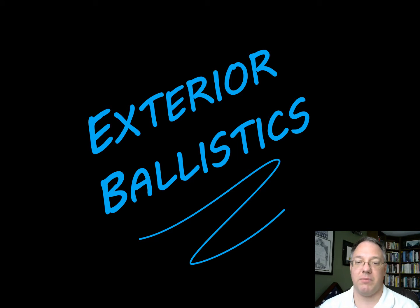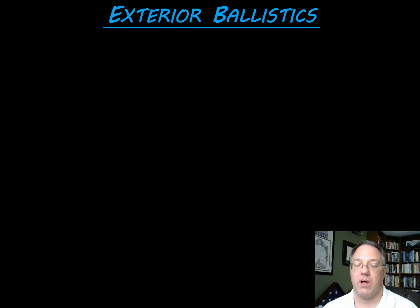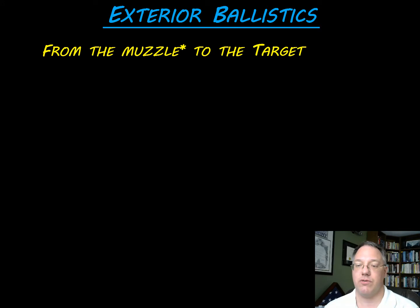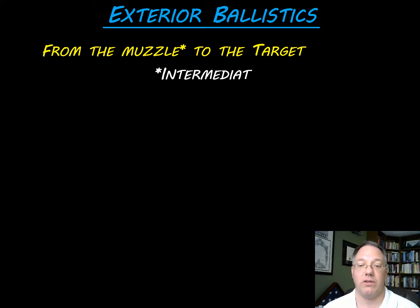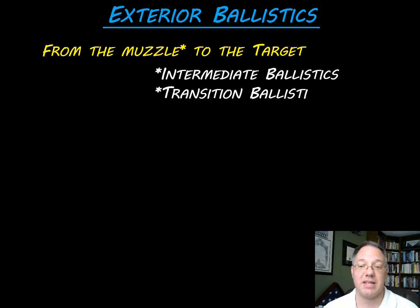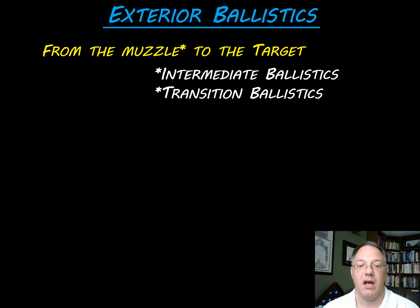Dr. Cooke here, and in this video we're going to be giving an introduction to exterior ballistics. Exterior ballistics is essentially everything from the muzzle to the target — all that flight that happens in the air. There is a thing called intermediate ballistics, also known as transition ballistics, that looks at that very narrow regime as we exit the muzzle and transition into exterior ballistics. For purposes of this course, from muzzle exit until we reach the target is exterior ballistics.